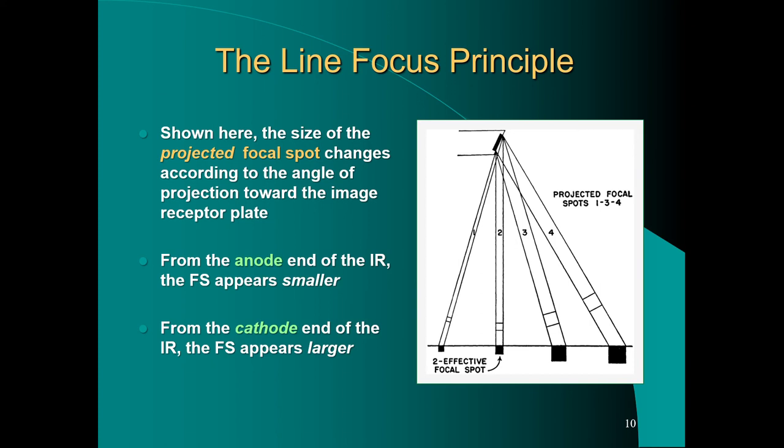If you lay on the table and look up towards the anode, you could see that in different spots on the table the projected focal spot would change in size. From the anode end of the image receptor, the focal spot would appear smaller. At the cathode end, the focal spot would appear larger. The smaller your focal spot is, the more detail you can achieve because that decreases the size of penumbra. Penumbra is the blurriness at the edges of your image. With a small focal spot you have less blur.